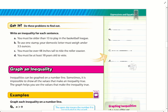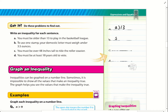Go ahead and try A, B, C, and D. For A, my age has to be greater than 13 to play in the basketball league. For B, to use one stamp your domestic letter must weigh under 3.5 ounces, so the weight of my letter needs to be less than 3.5 ounces. For C, you must be over 48 inches tall to ride the roller coaster, so my height has to be greater than 48 inches. For D, you must be at least 18 years old to vote, so I can be 18 or older — greater than or equal to 18.